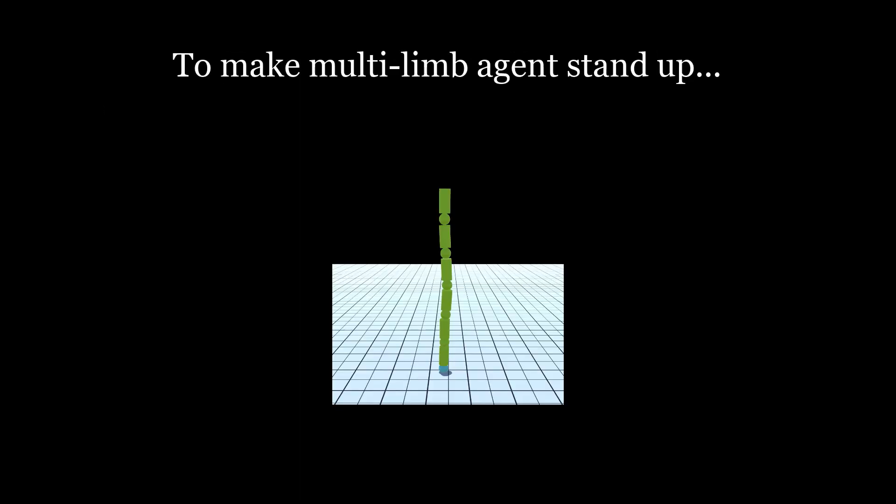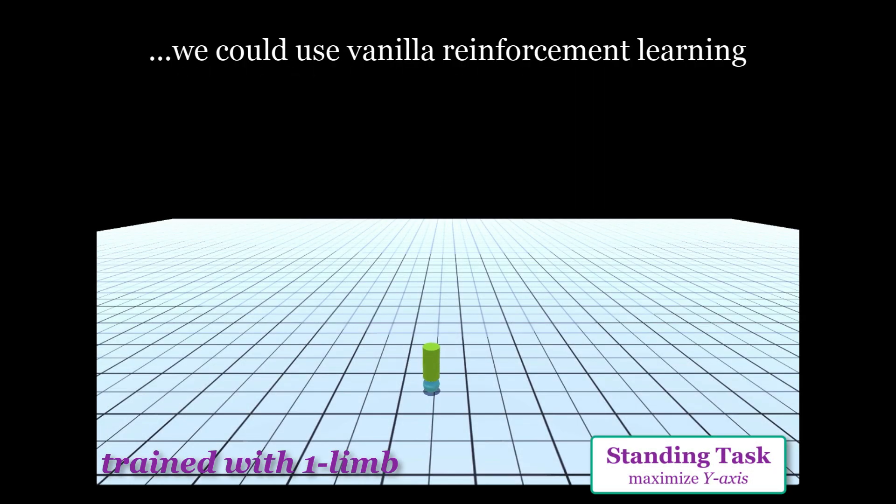Suppose we want to make this torque-controlled, multi-limbed agent stand up. Let's see what happens if we use vanilla reinforcement learning.